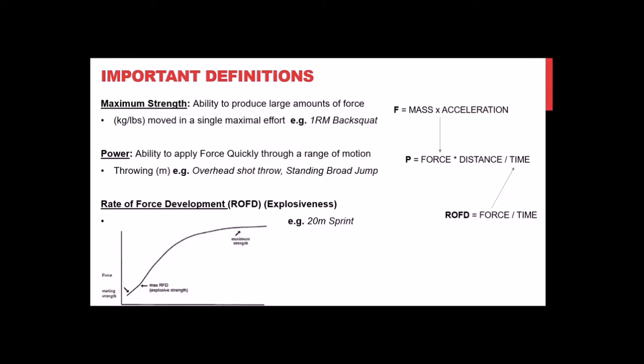Power is the ability to apply force quickly through a range of motion. Examples include an overhead shot throw or a standing broad jump — activities that really encapsulate the expression of power. In all track and field events, power is the number one quality we're focused on increasing from a physiological standpoint when enhancing performance.